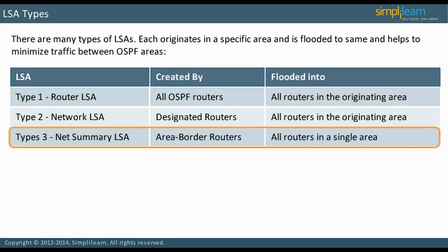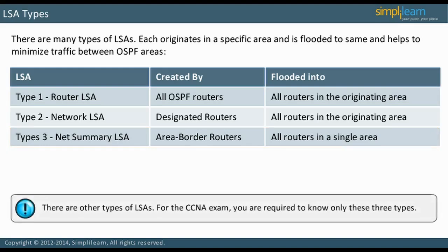Type 3 LSA is a Net Summary LSA. It is created by Area Border Routers and flooded into all routers in a single area. They are generated by ABRs to flood into other areas, except totally stubby or Not So Stubby Areas (NSSA). There are three other types of LSAs; however, at the CCNA level, you are required to know only the first three types.